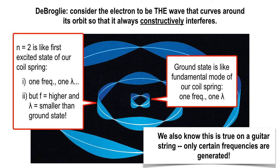The big breakthrough was Louis de Broglie saying, 'let's think of the electron as a wave.' Once you do that, it's a lot like a guitar or other musical instruments that have vibrations. Think about drumming — the drum head is a circular membrane with oscillation modes. It has a fundamental mode and excited states. Any musical instrument has certain allowed frequencies because of the design of the instrument.